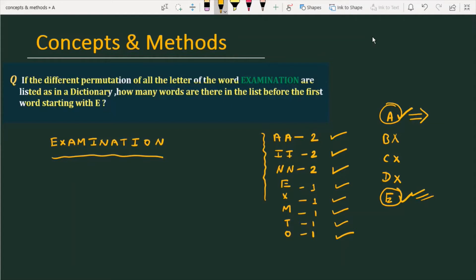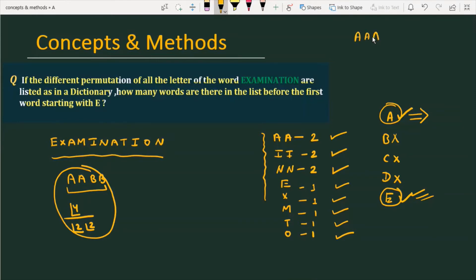The key concept we need is: if you have two A and two B and you want to arrange these four letters in four places, the number of ways is factorial 4 divided by factorial 2 and factorial 2. This comes from permutation and combination. For another example, if you have three A and two B and you want to arrange these five letters in five places, the answer is factorial 5 divided by factorial 3 and factorial 2.